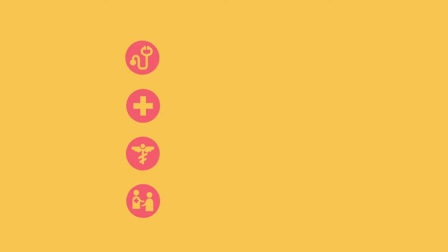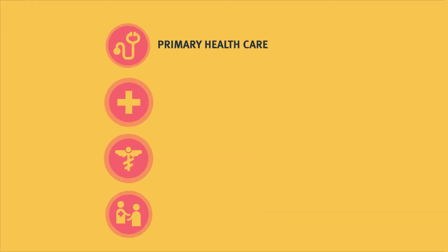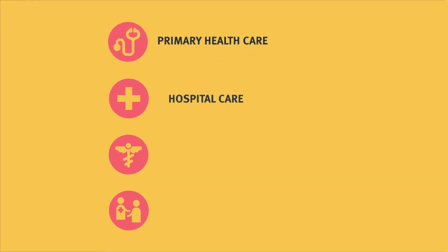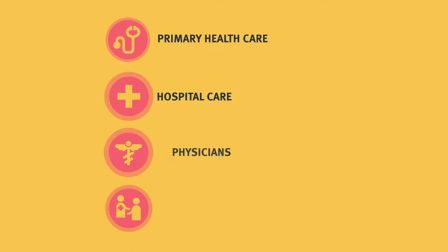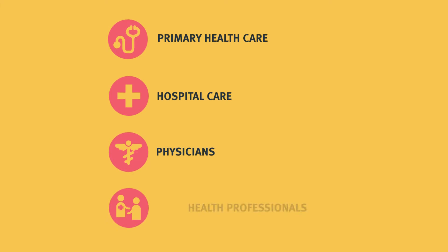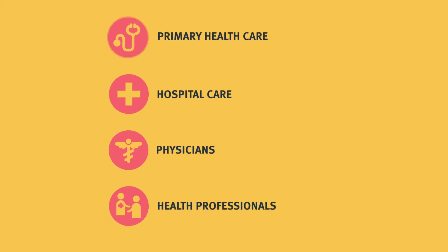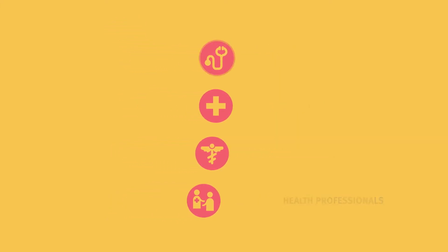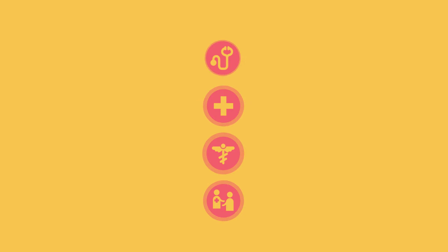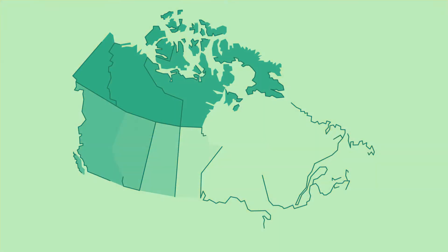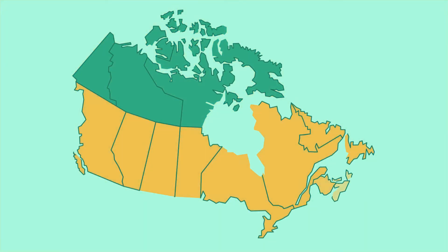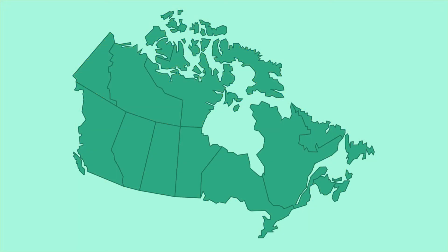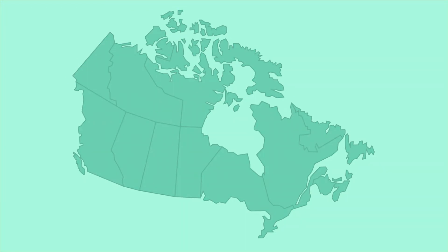These services include primary health care, hospital care and services of physicians and other health professionals. The amount of health care coverage, what is being delivered and who delivers it, varies across Canada. The provinces and territories may provide supplementary coverage for health services.